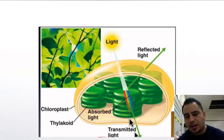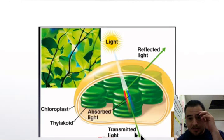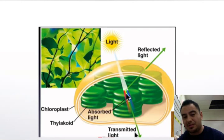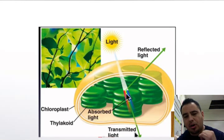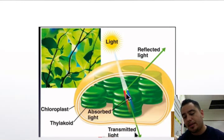Green is also transmitted through the leaf. The key idea is that green bounces back out and is not absorbed, while all the other colors and their energies are absorbed from the light.